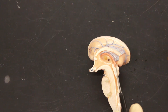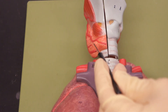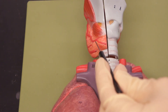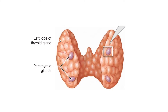We have the pineal gland, which produces melatonin. We have the thyroid gland, which produces thyroxine, or T4, and triiodothyronine, or T3. It also produces calcitonin. Here is a view of the thyroid with parathyroid glands in purple. The parathyroid glands produce parathyroid hormone.